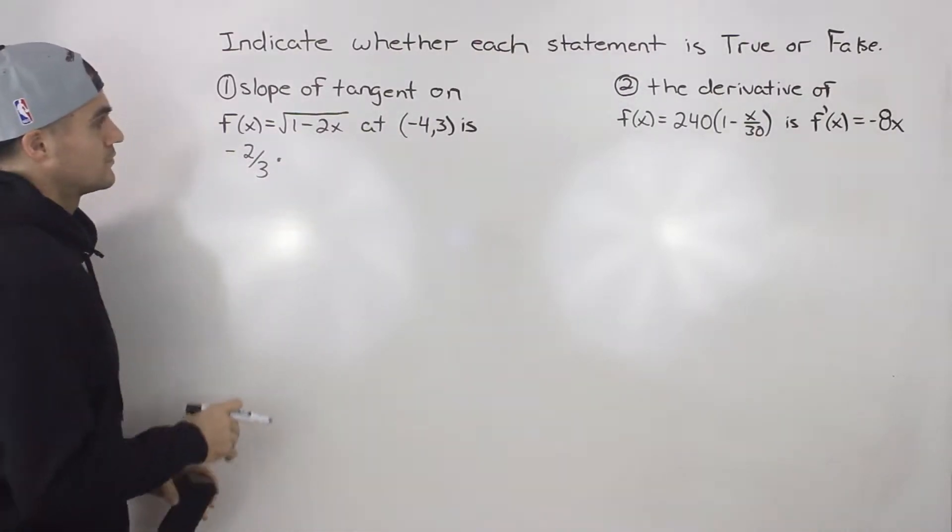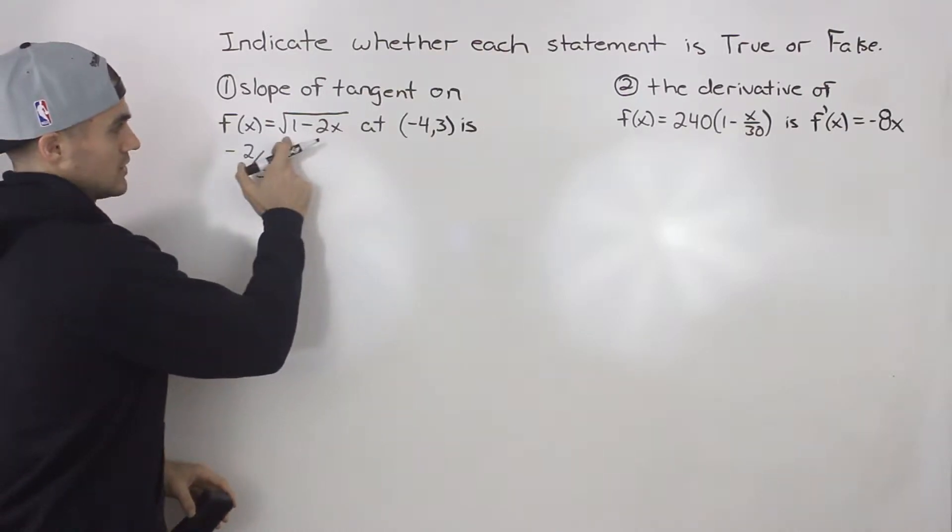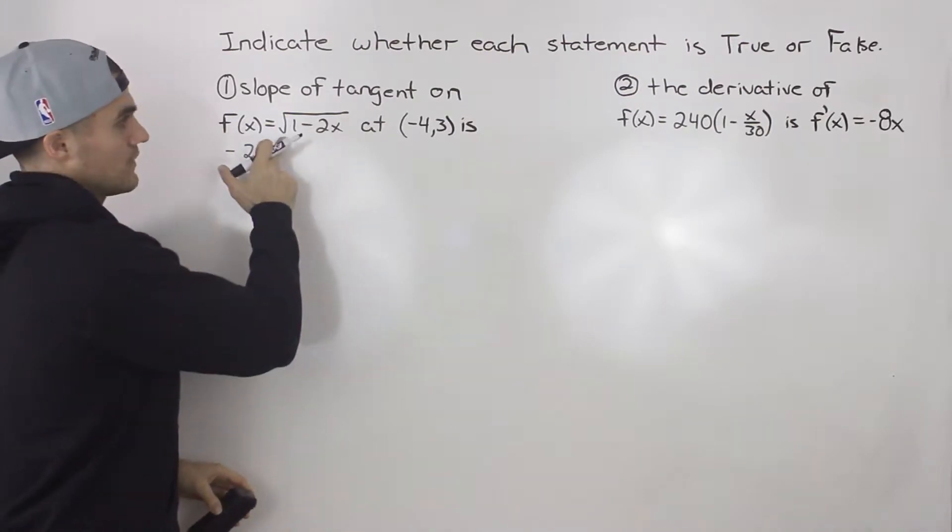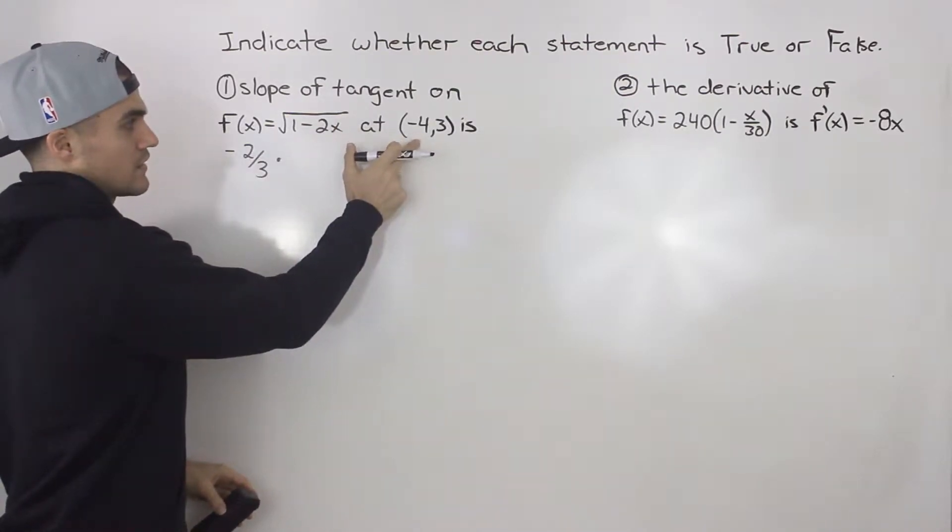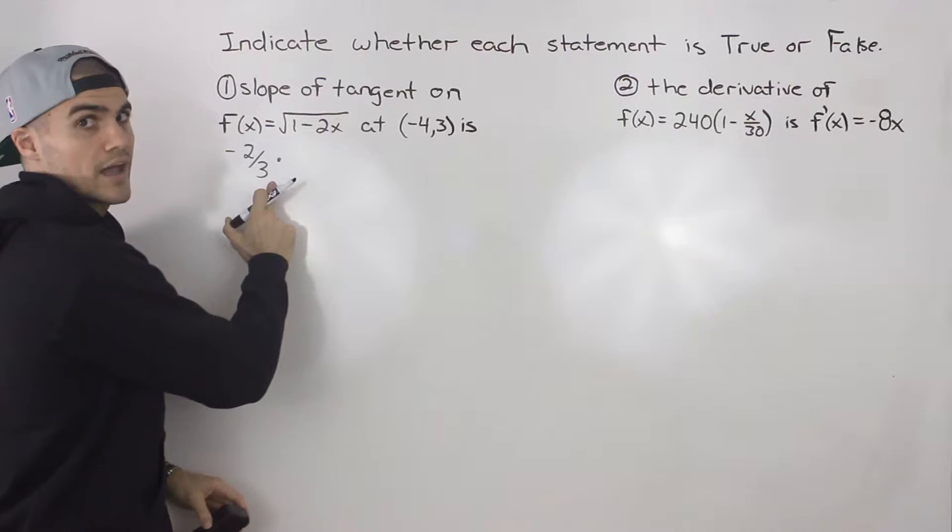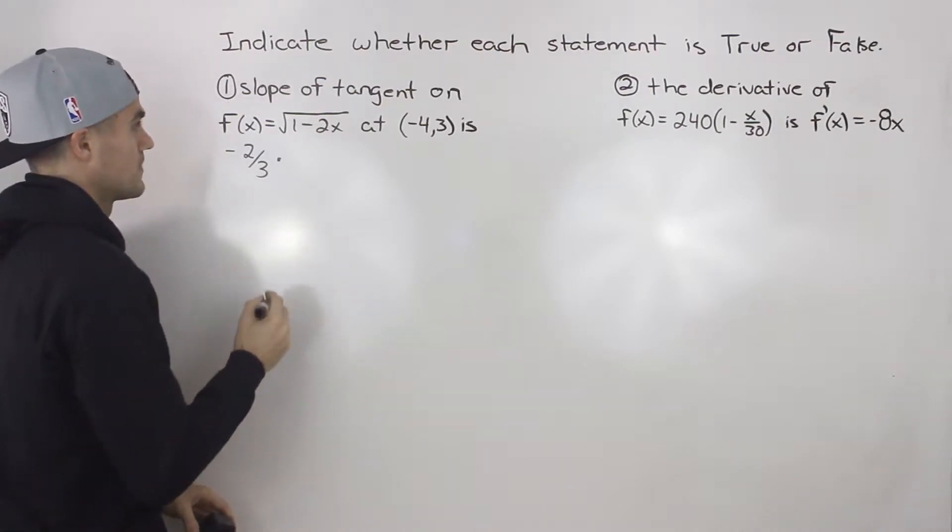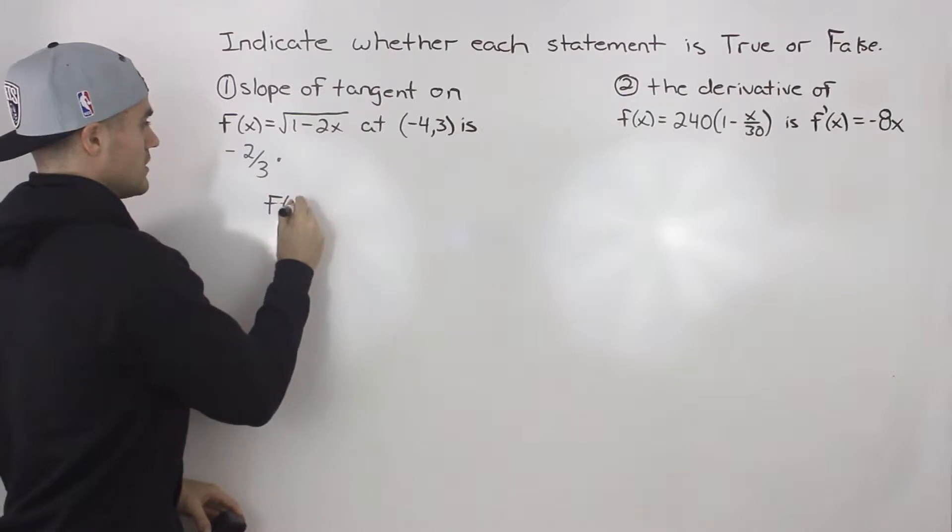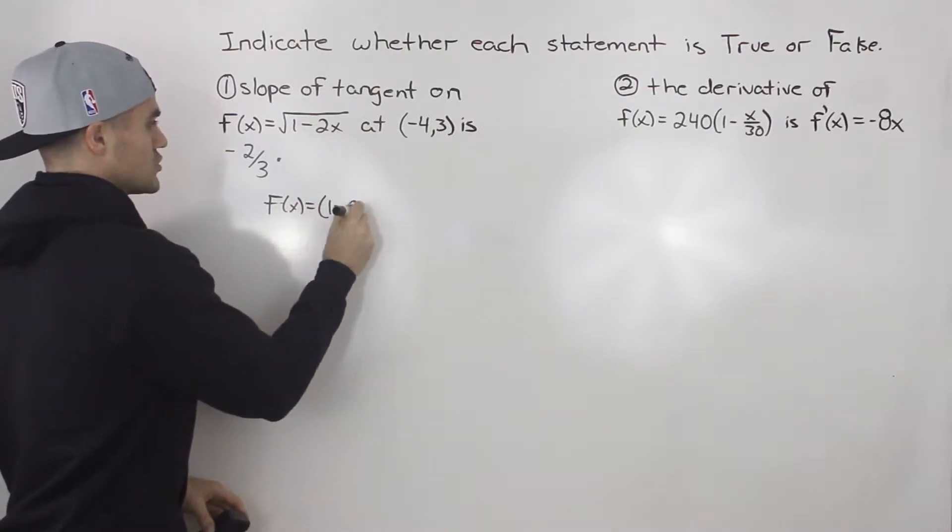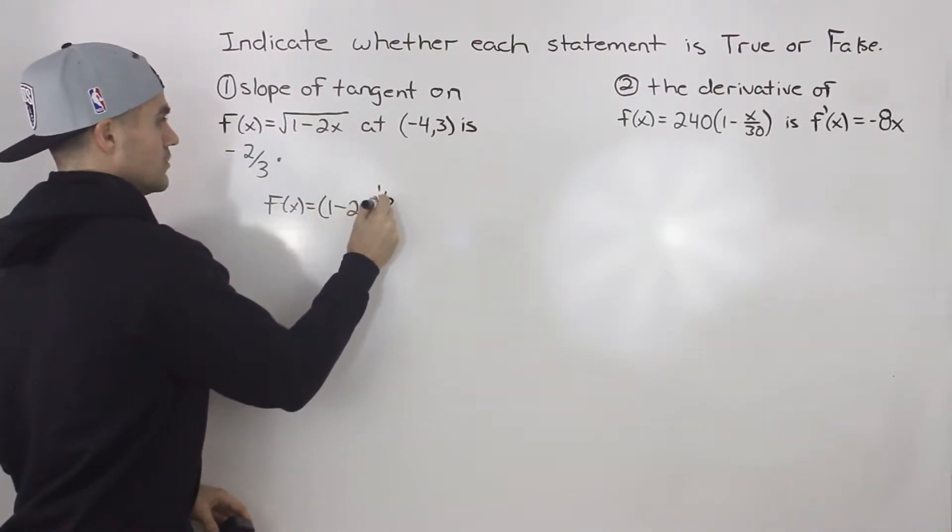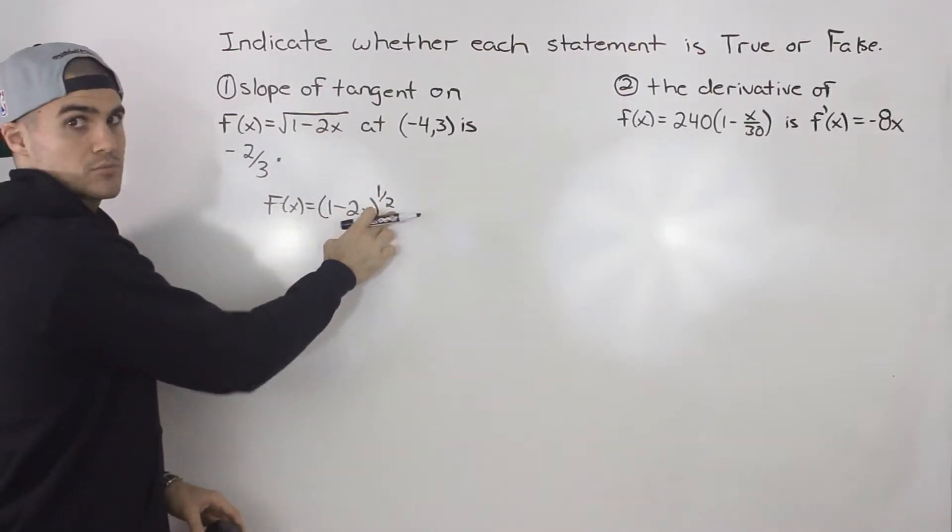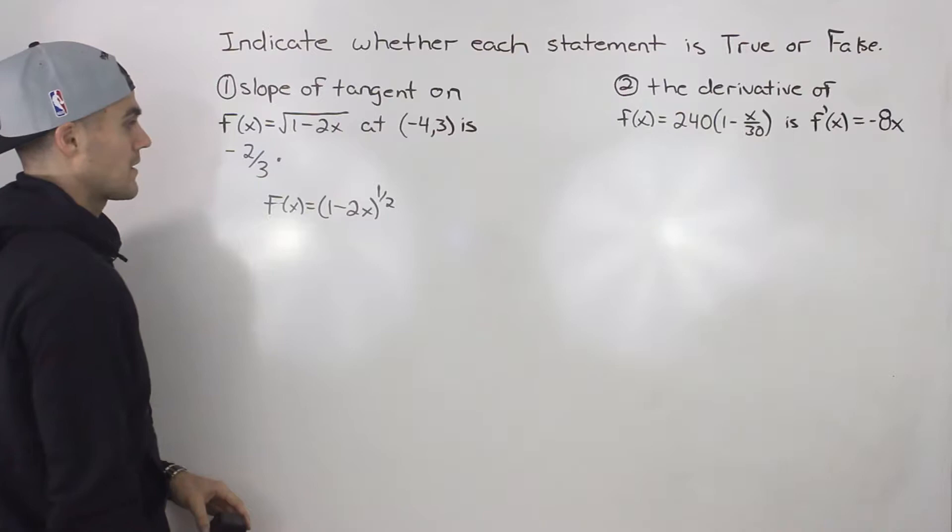To find out the slope of the tangent on this function, we have to first find the derivative. And then once we find the derivative, we can just plug in this x value -4 and then see if we get that slope of -2/3. So this function here, I'm going to rewrite as (1 - 2x) to the power of 1/2. I like to take any radicals and change them to rational exponents right away.